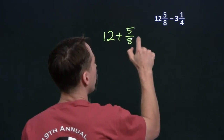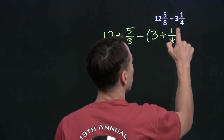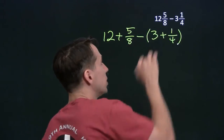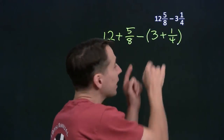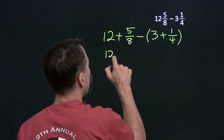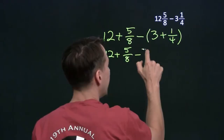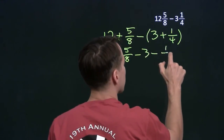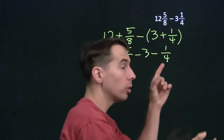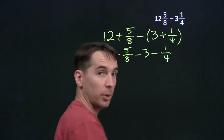So we get 12 plus 5 eighths, and the 3 and a quarter becomes 3 plus 1 quarter. Now notice these parentheses here — they're very important. What we're doing when we subtract 3 and a quarter is we're subtracting the 3 and we're subtracting the quarter. So when we distribute this out, we get minus 3 and minus a quarter. That's because we're subtracting 3 and a quarter — we're subtracting 3 and we're subtracting a quarter. There's not a plus there, there's a minus.